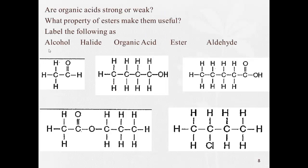Question time. You have five things to label here: alcohol, halide, organic acid, ester, and aldehyde. You should definitely be able to label which one is which simply by looking at the reference table. That brings us to the end of 7.5. I will see you guys in the next one.